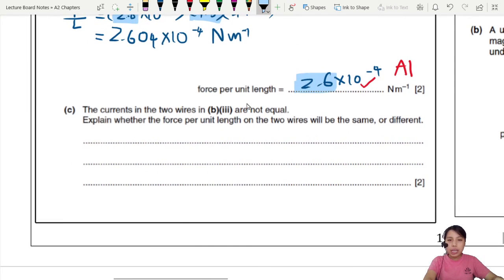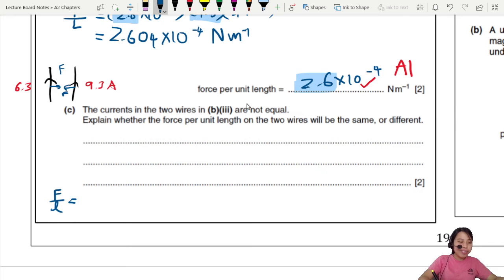We can write 2.6 times 10 negative 4. Why I chose 2 significant figures, it's because I see what values I use to calculate this number. 2.8, 2 sig figs also. The currents in the two wires are not equal. One of these wires got 6.3 amps. The other wire, 9.3. So will the force on both wires be the same?